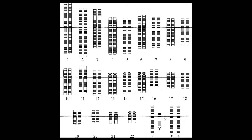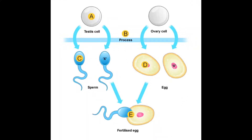Human sex cells contain only one chromosome from each pair, for a total of 23. During sexual reproduction, one egg and one sperm join to form a zygote, a cell with a complete number of chromosomes. The joining of sperm and egg is called fertilization.